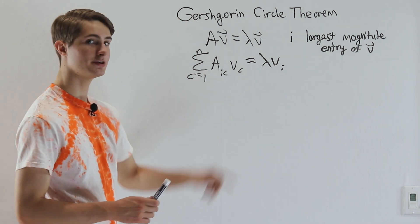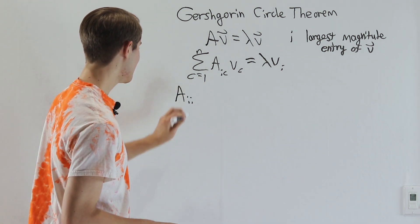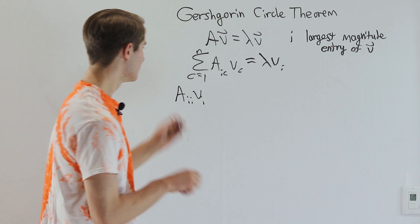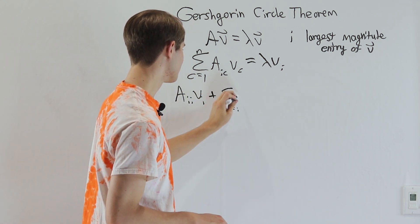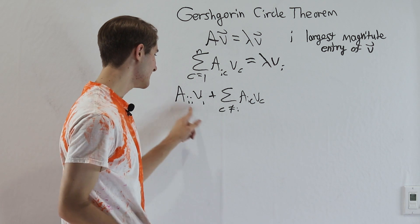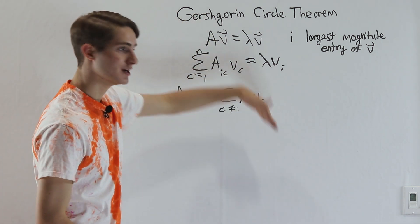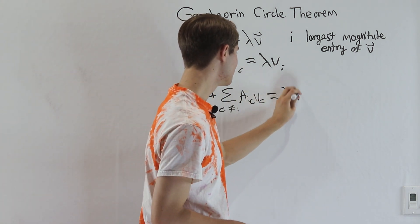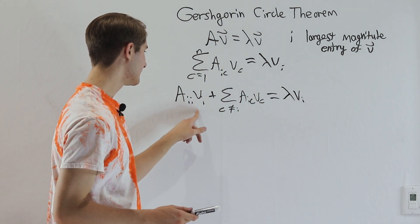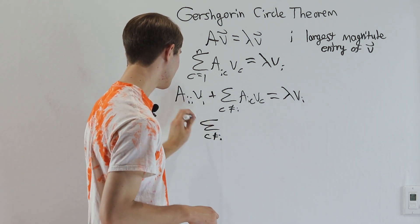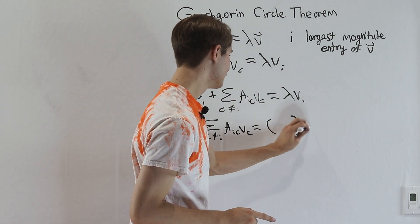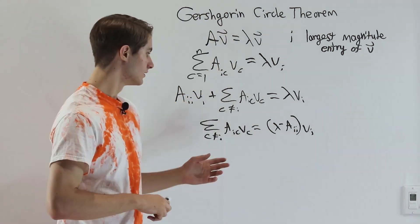From here, we split this summation into two parts. First, we pull out the C equals i entry, giving us A_ii times V_i — the diagonal entry. Then we add the sum over all C not equal to i of A_IC times V_C. Setting this equal to lambda V_i, we subtract A_ii V_i from both sides to get: the sum with C not equal to i of A_IC V_C equals lambda minus A_ii, times V_i.